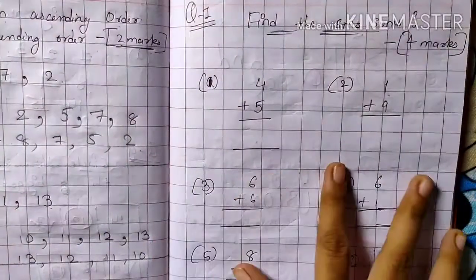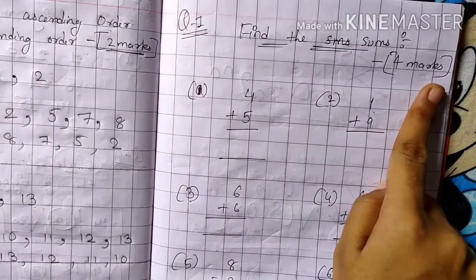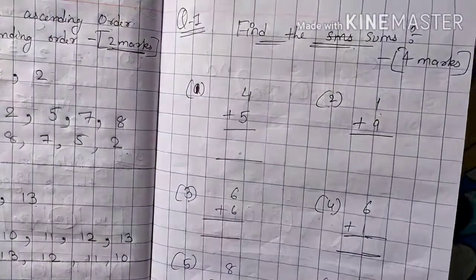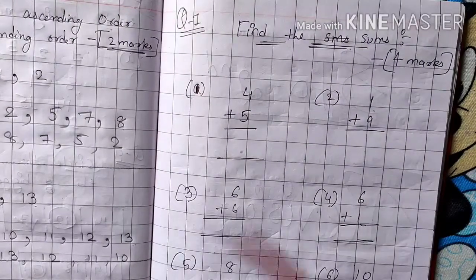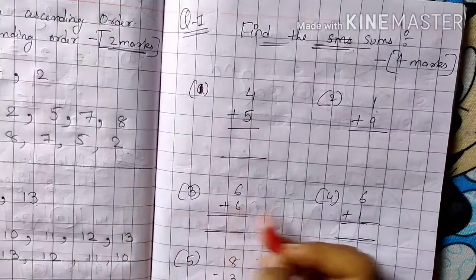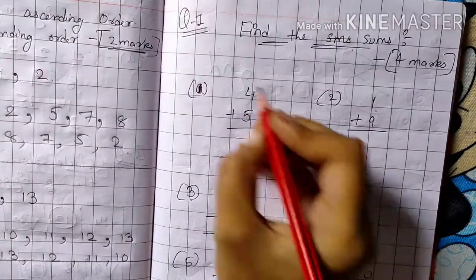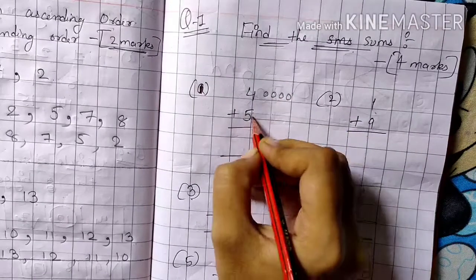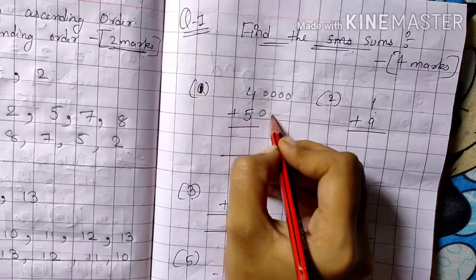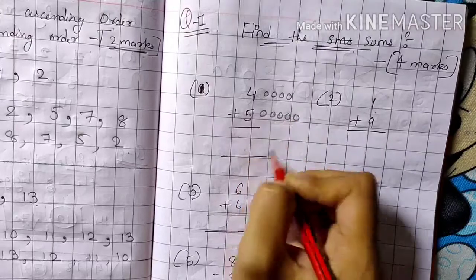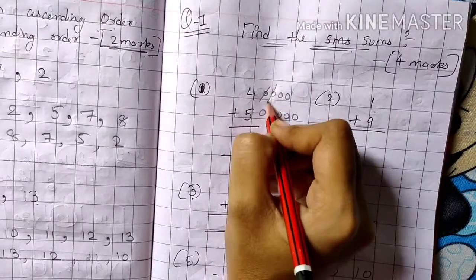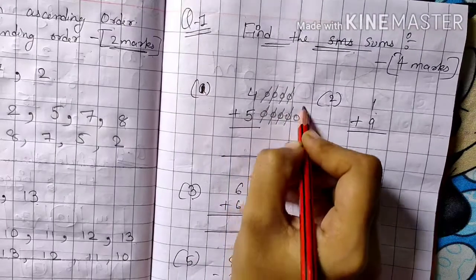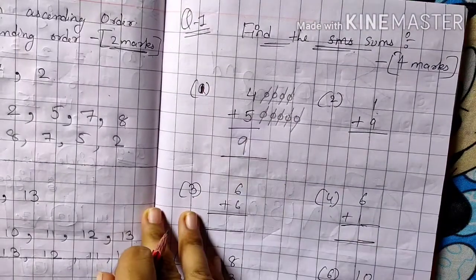Question number I: Find the sums — four marks. First: 4 plus 5. Draw 4 balls, then 5 balls below, count all together — one through nine. Answer is 9. Second: 1 plus 9. Draw 9 balls, add 1 more — count to ten. Answer is 10.